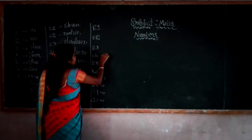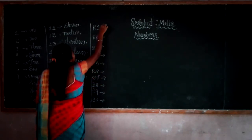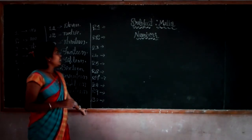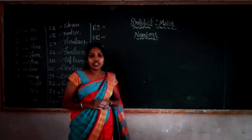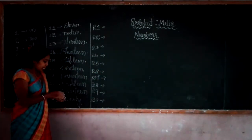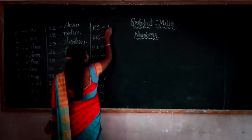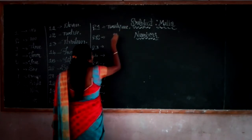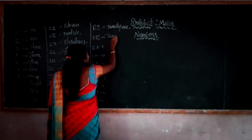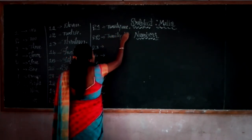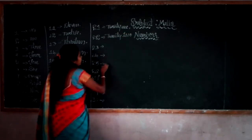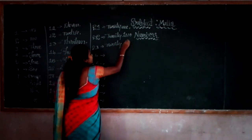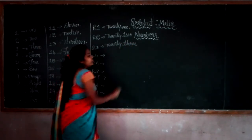Do you know the spelling of these numbers? The spelling of 20 is T-W-E-N-T-Y. Now you just add O-N-E to get 21, TWENTY ONE. Add T-W-O to get 22, TWENTY TWO.